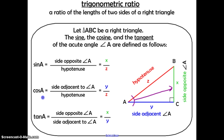Likewise, the cosine of A is equal to the ratio of the side adjacent to angle A — side Y — over the hypotenuse, which is Z. The tangent of angle A is equal to the ratio of the side opposite from angle A, labeled X, over the side adjacent to angle A, labeled Y. We're going to use these a lot. Sine, cosine, and tangent are also found on your calculator, which we will use in class as well.